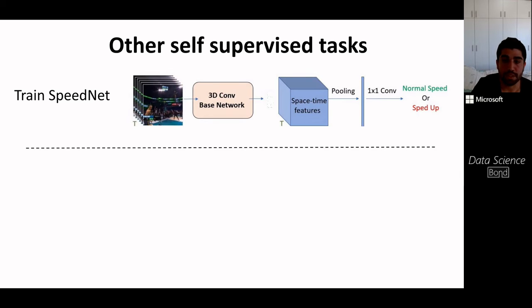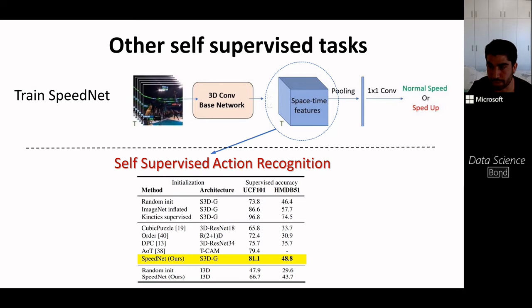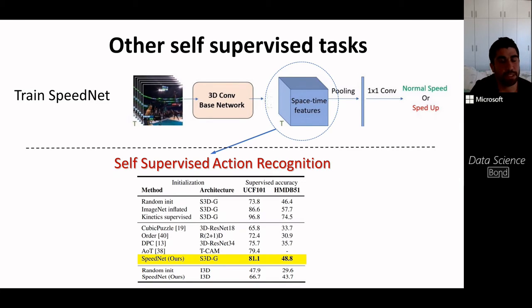We can also use SpeedNet for other self-supervised tasks. Since we used no annotations during training — SpeedNet was trained on a large corpus of Kinetics videos in a self-supervised manner — we can utilize the spatiotemporal representations it learned and fine-tune the model for action recognition. At the time of publishing the paper, our method beat all other models pre-trained in a self-supervised manner on Kinetics, though this is likely outdated given how fast the field moves.